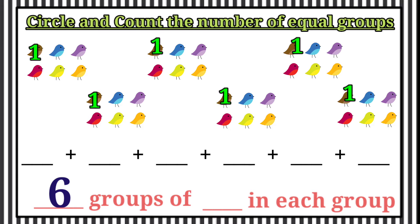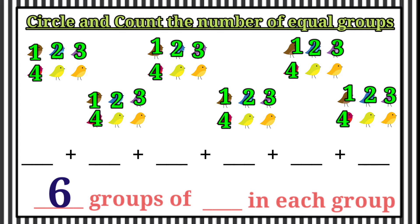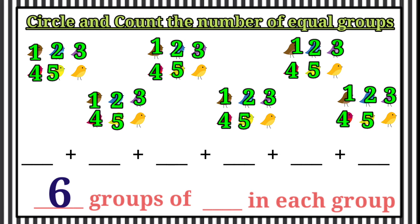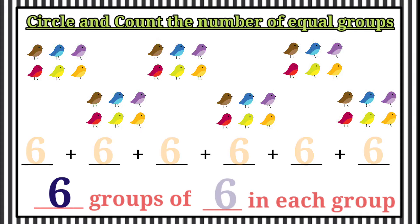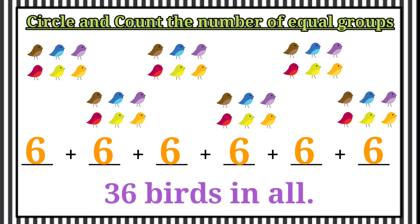Then we will count how many in each group. 1, 2, 3, 4, 5, 6. 6 in each group. So, therefore the answer is 36 birds in all.